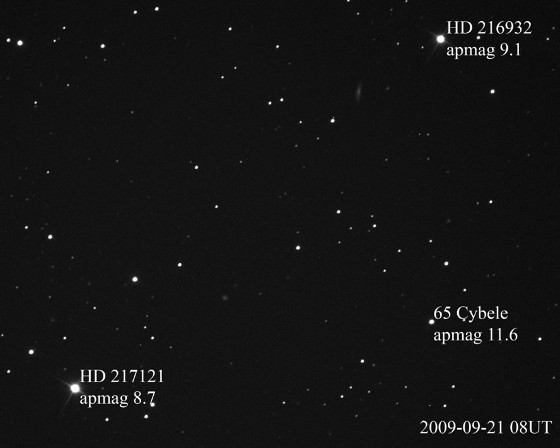The apparent magnitude of an astronomical object is a number that is a measure of its brightness as seen by an observer on Earth. The magnitude scale is logarithmic. A difference of 1 in magnitude corresponds to a change in brightness by a factor of the fifth root of 100, or about 2.512. The brighter an object appears, the lower its magnitude value — an inverse relation — with the brightest astronomical objects having negative apparent magnitudes, for example Sirius at −1.46.